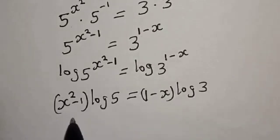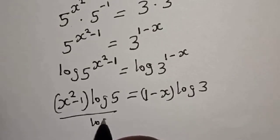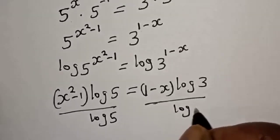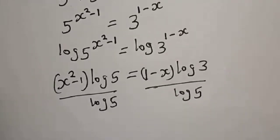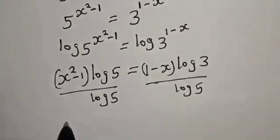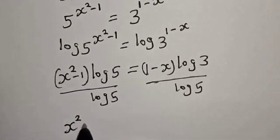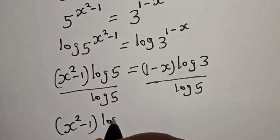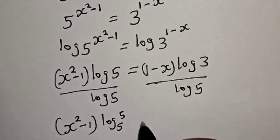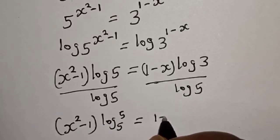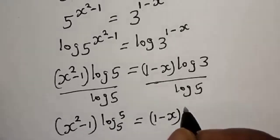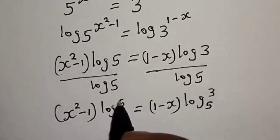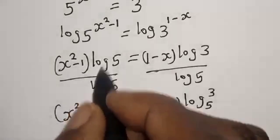Let's divide both sides by log 5. This can be written as (s squared minus 1) times log base 5 of 5 equals (1 minus s) times log base 5 of 3. But log base 5 of 5 is 1, so that simplifies — you can cancel it from here.